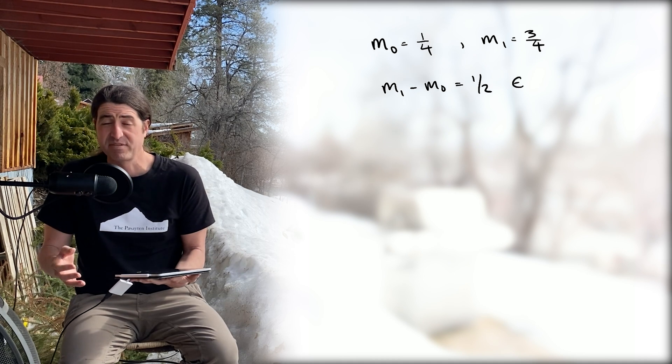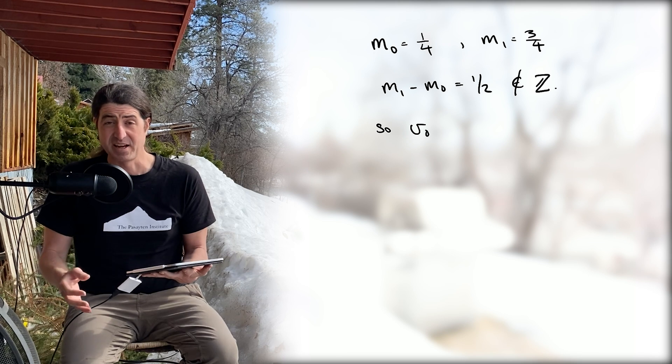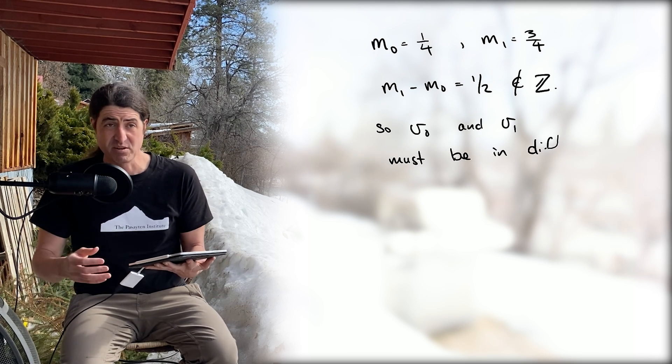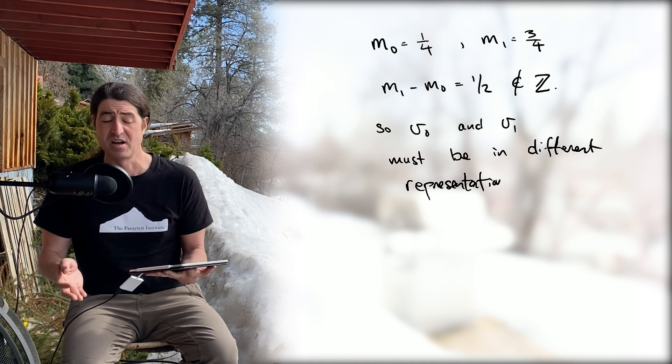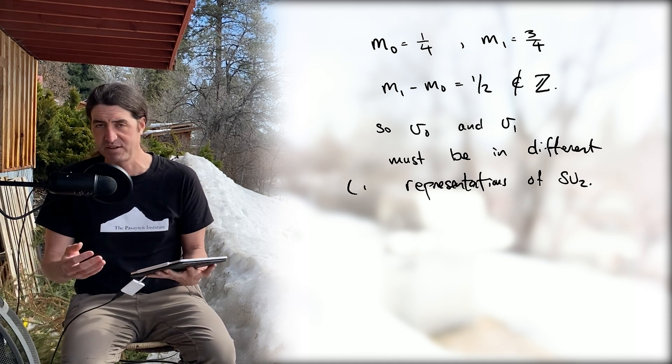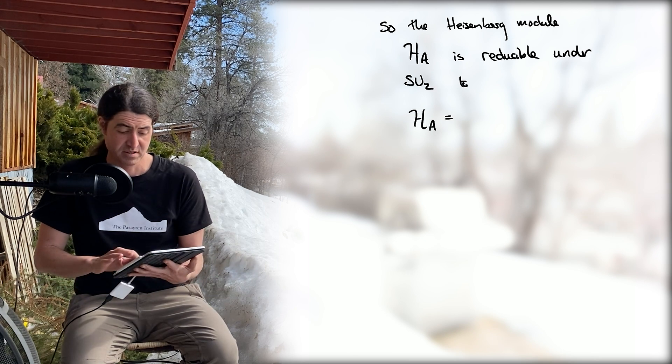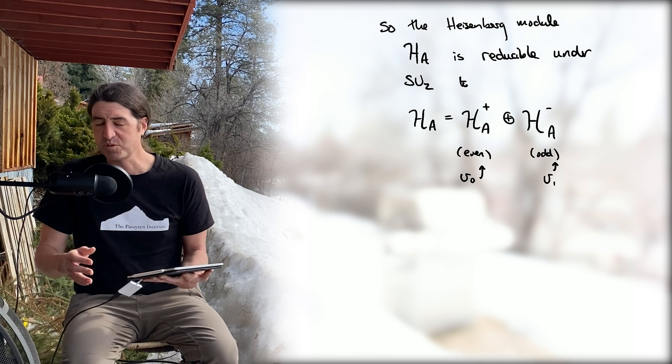Let's just label those: m1 as three fourths and m0 as one fourth. We observe that m1 minus m0 is one half—that is, it's not an integral number. From what we learned last time, by property of the SU(2) algebra, because they don't differ by a whole number, they must be in different irreducible representations. In other words, H_A is reducible under SU(2) into even and odd states.